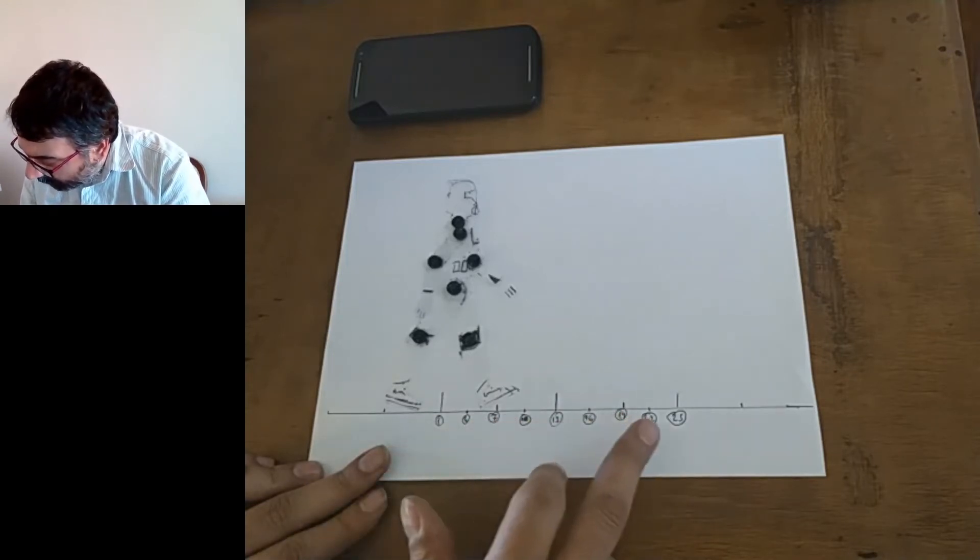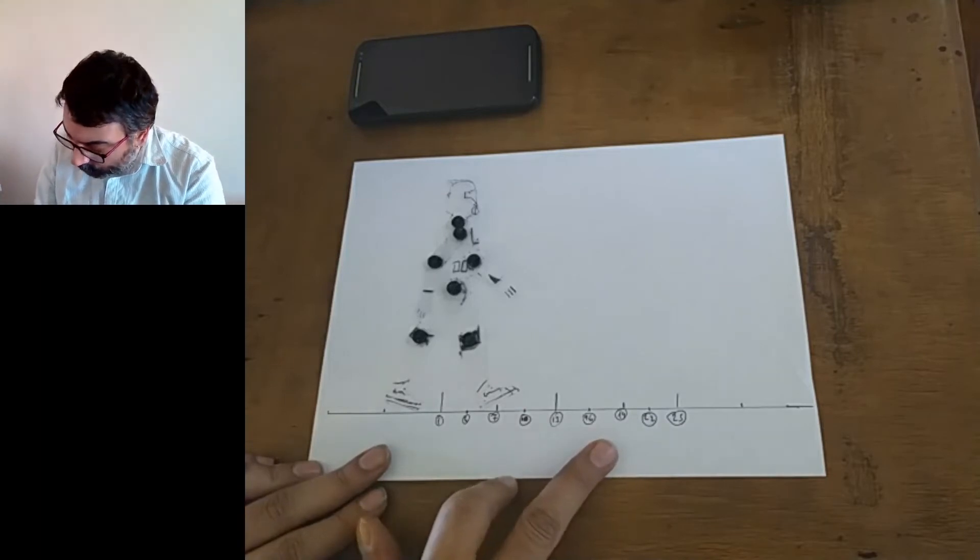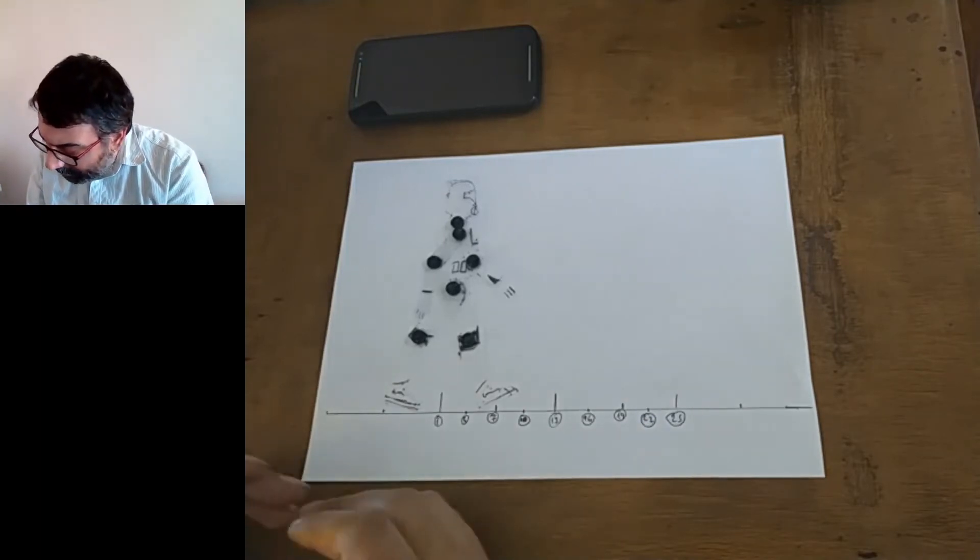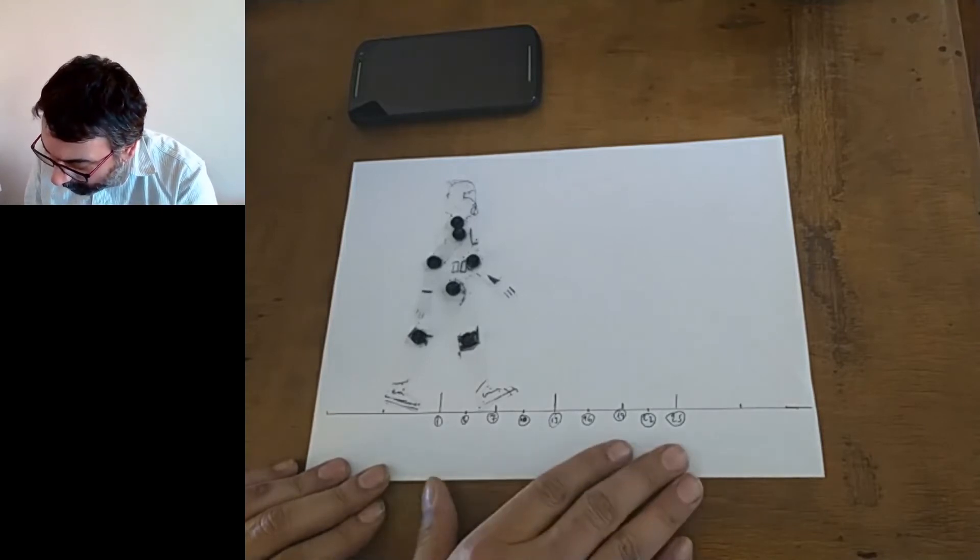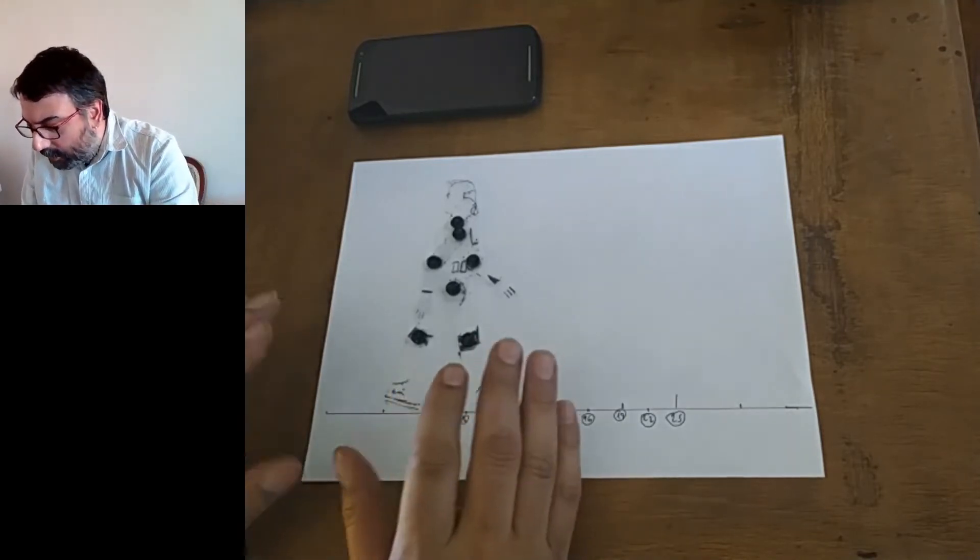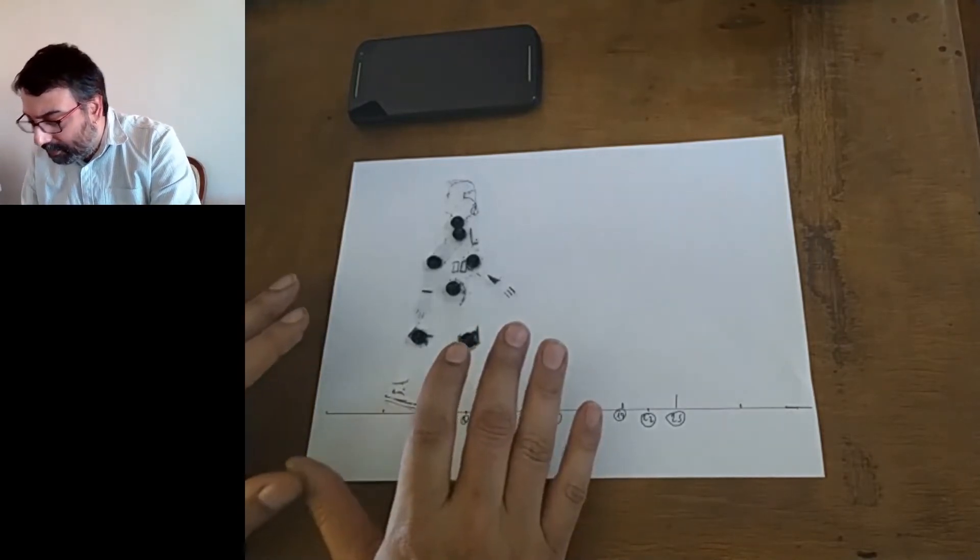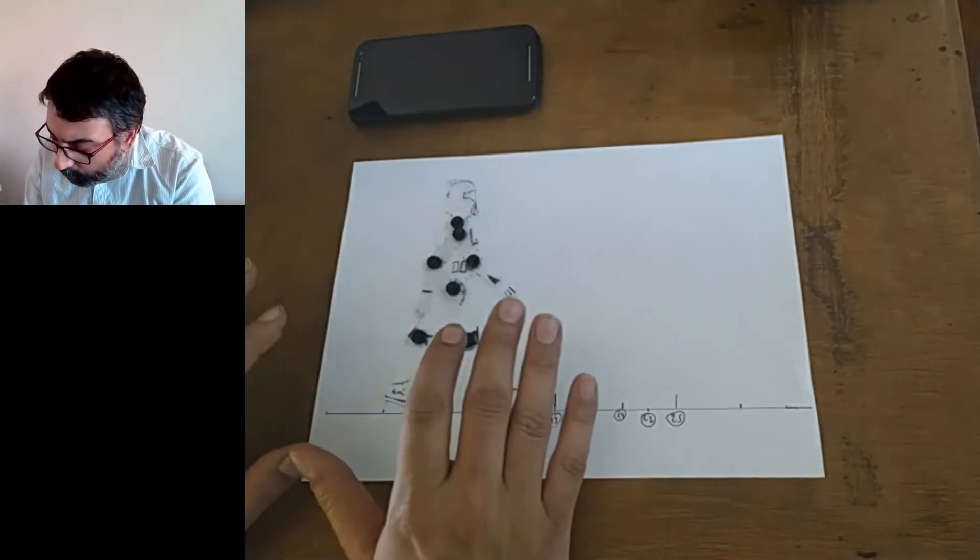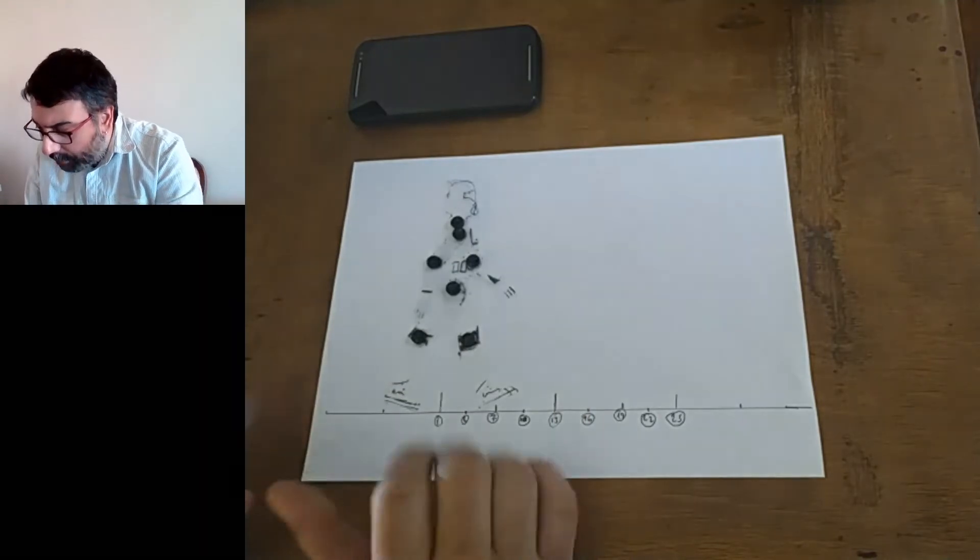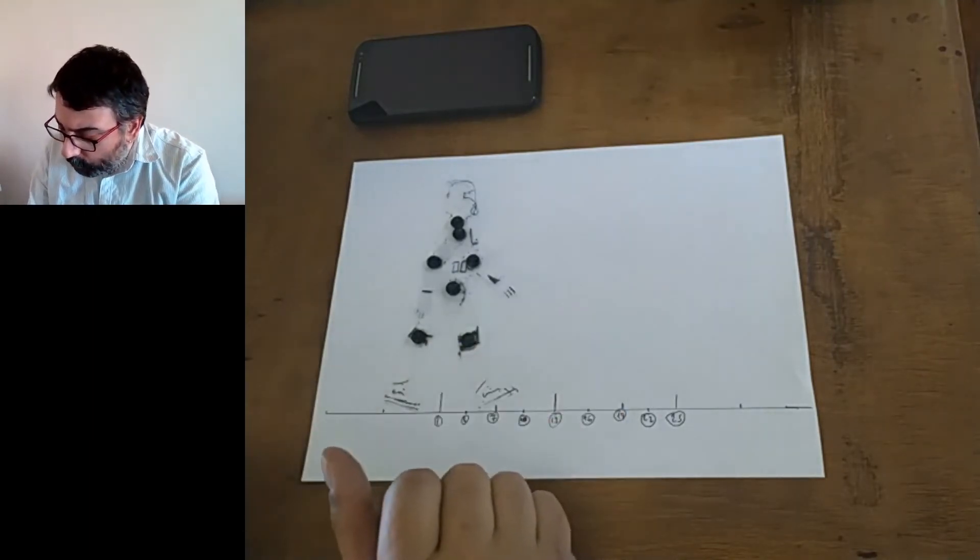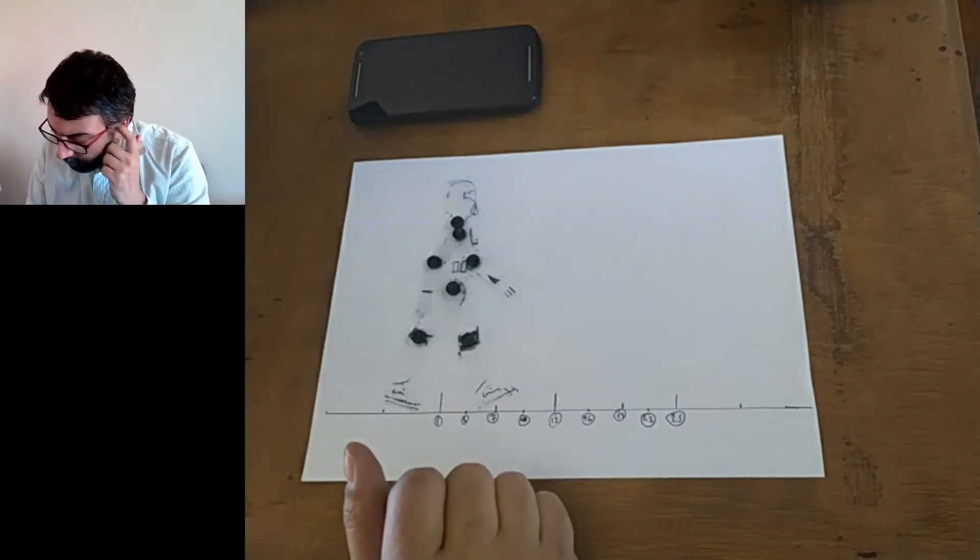I wrote down frame numbers on these locations: 1, 13 and 25 for extremes, 7 and 19 for breakdowns, 4, 10, 16 and 22 for in-betweens. These lines, marks and frame numbers will make it easier to control the movement and poses on stage.